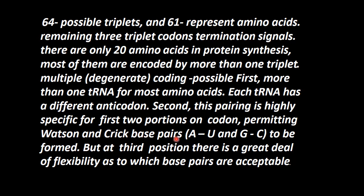Now, the Watson-Crick base pair model: Adenine pairs with Uracil, and Guanine pairs with Cytosine. There are four nucleotides in messenger RNA. Three nucleotides together are called a triplet. So there are 64 possible triplets — calculated as 4 × 4 × 4 = 64.